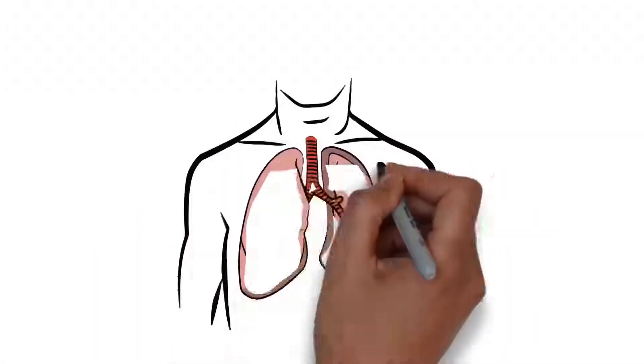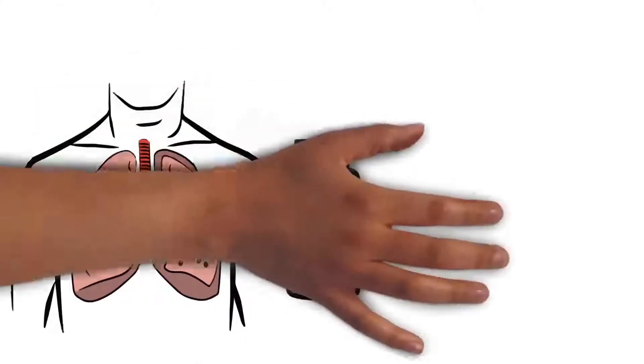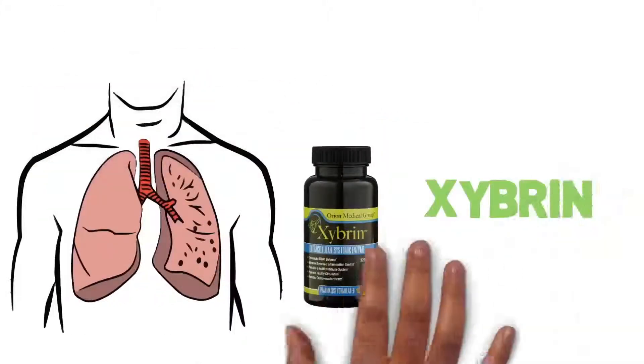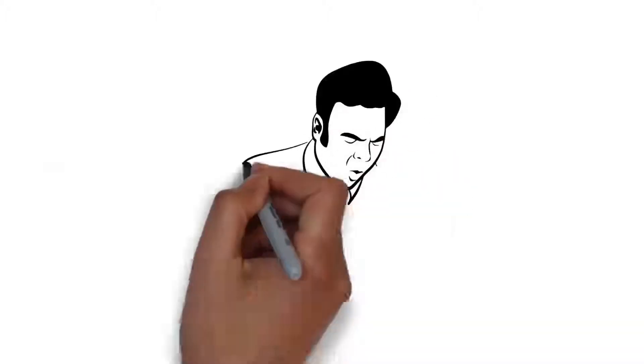You have pulmonary fibrosis causing a buildup of fibrin in your lungs, and we have Zybrin, the world's strongest and most effective fibrin-reducing systemic enzyme. You have excess coughing and restriction in your breathing, and we have Respironex.